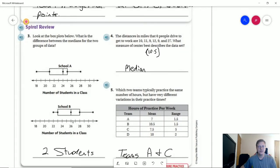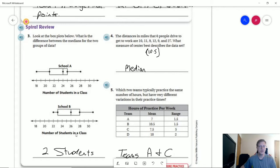For number three, all we had to do was do 26 minus 24 to get a difference in the medians of two students.